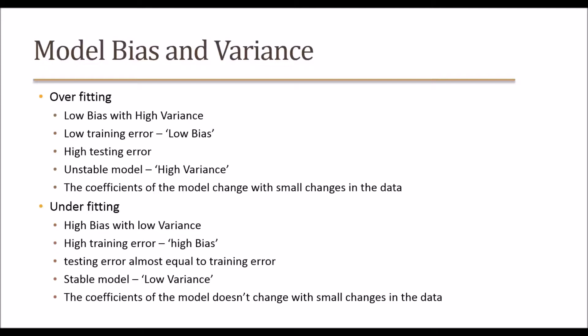The coefficients of the model change with small changes in the data. Even if we make a small change in the data, the whole model might change a lot. That is called overfitting, or the model with huge variance.